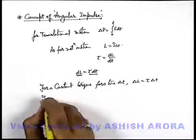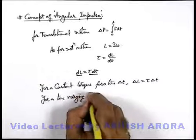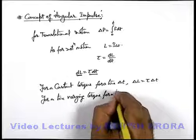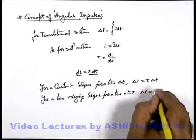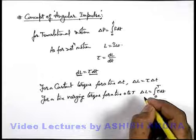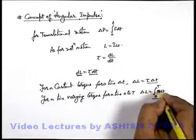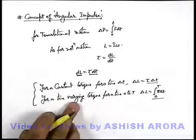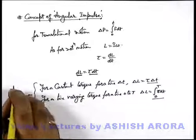Similarly, for a time-varying torque applied from time zero to t, the net change in angular momentum can be written as the integration of tau d t from zero to t. Now, this tau delta t or integration of tau d t represents the net change in angular momentum, and as an analogous counterpart of translational motion, this can be written as angular impulse.